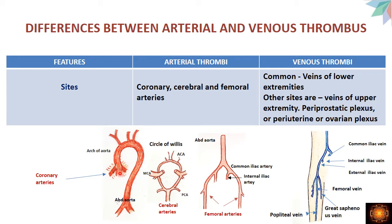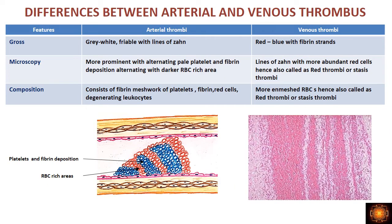Regarding sites: arterial thrombi are most common in the coronary arteries, cerebral arteries, and femoral arteries. The coronary arteries arise at the opening of the aorta; cerebral arteries include the anterior, middle, and posterior cerebral arteries at the Circle of Willis; and the femoral artery is a branch of the common iliac artery. For venous thrombi, the most common sites are veins of the lower extremities — femoral, saphenous, or popliteal veins — as well as upper extremity veins, periprostatic plexus, and periuterine and ovarian plexus.